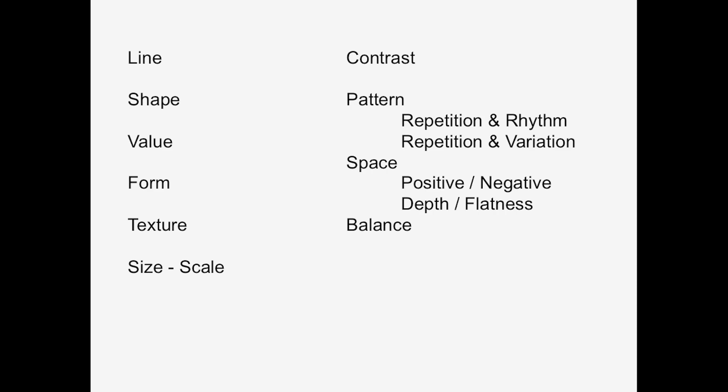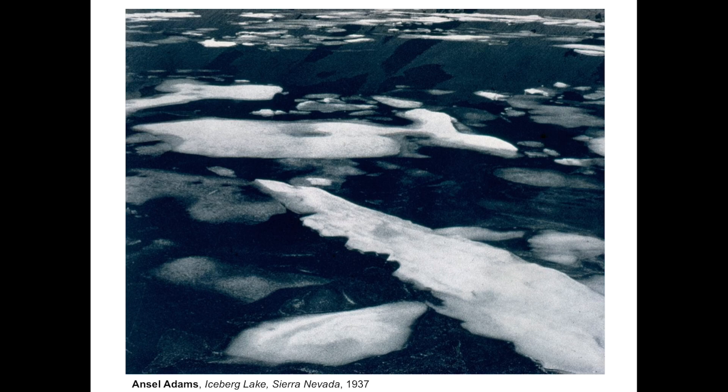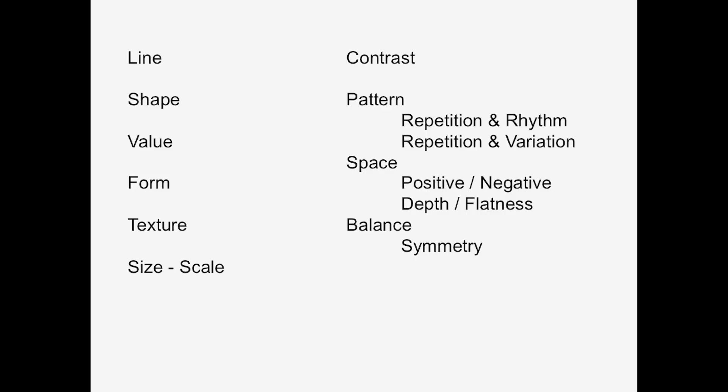Balance is the distribution of visual weight of objects, colors, or textures, as well as space. It's playing one kind of shape, one kind of tone or color off of one another, balancing the different parts. This Ansel Adams photograph is a good example of that, where there are a couple of more domineering focal points, but plenty of other points in the photograph that capture our attention and move our eye across the frame.